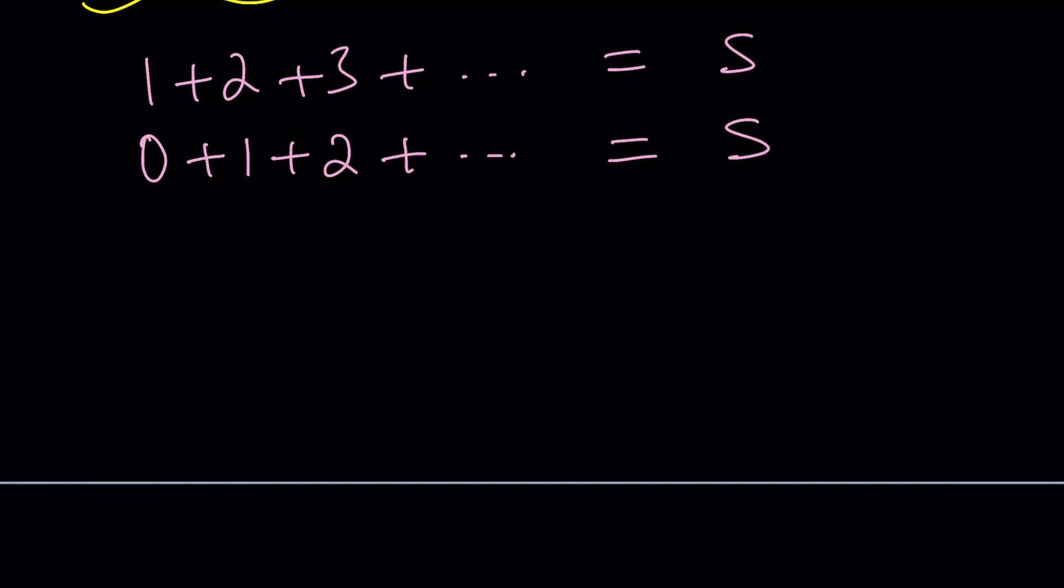So let's go ahead and negate everything in the second sum. And we're going to add the opposite. In other words, we're going to subtract these two sums. 1 minus 0 is 1. 2 minus 1 is 1.